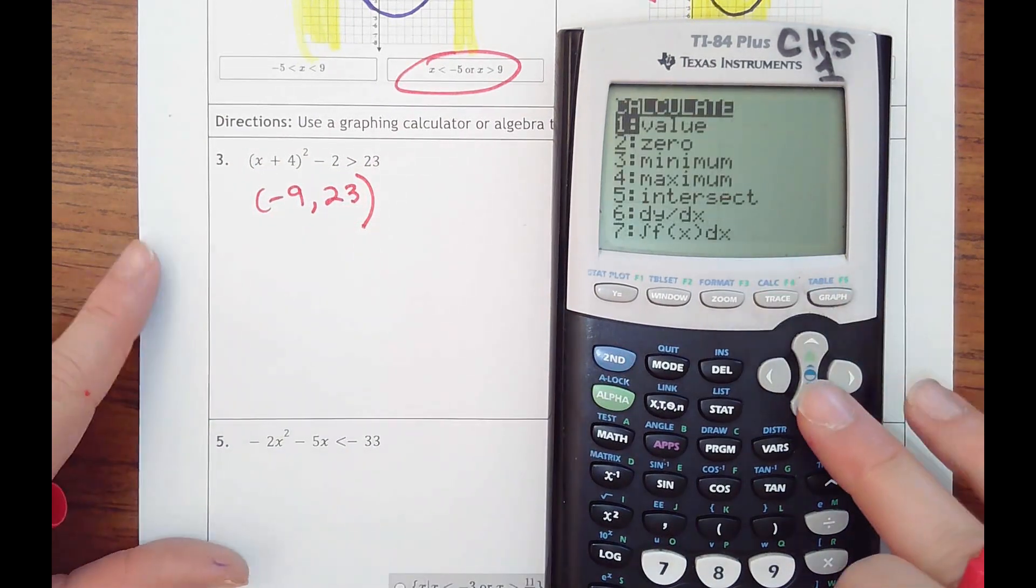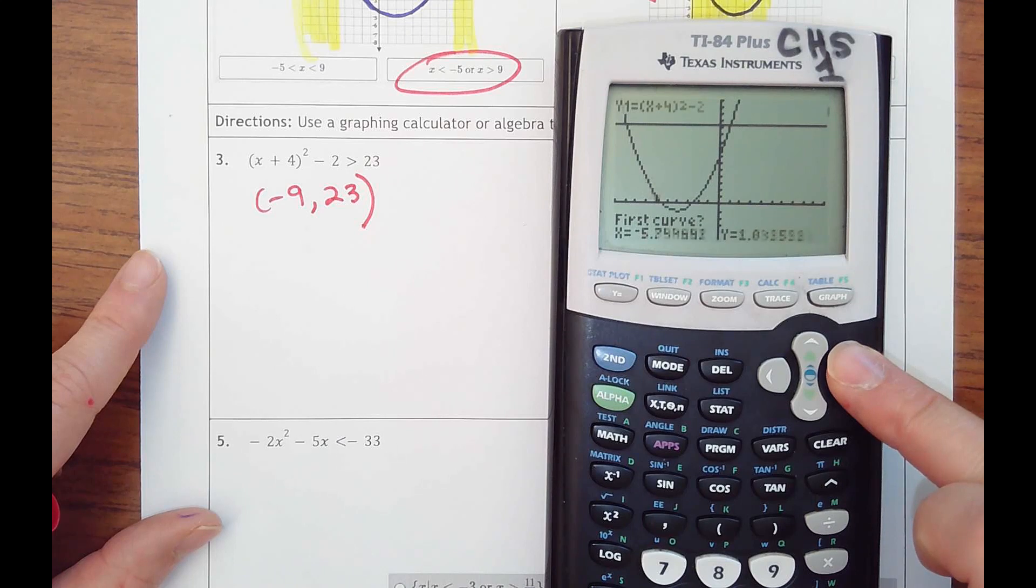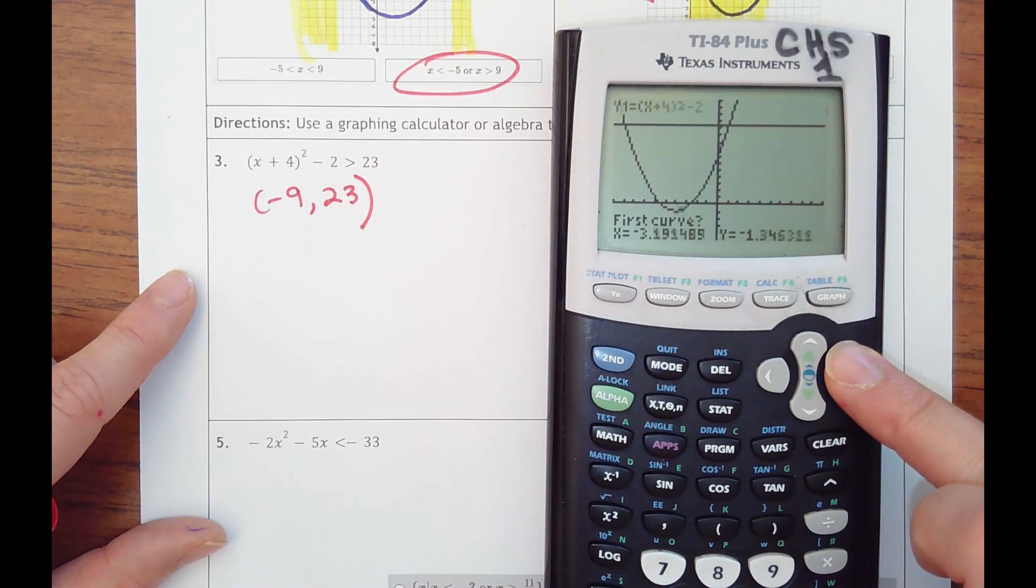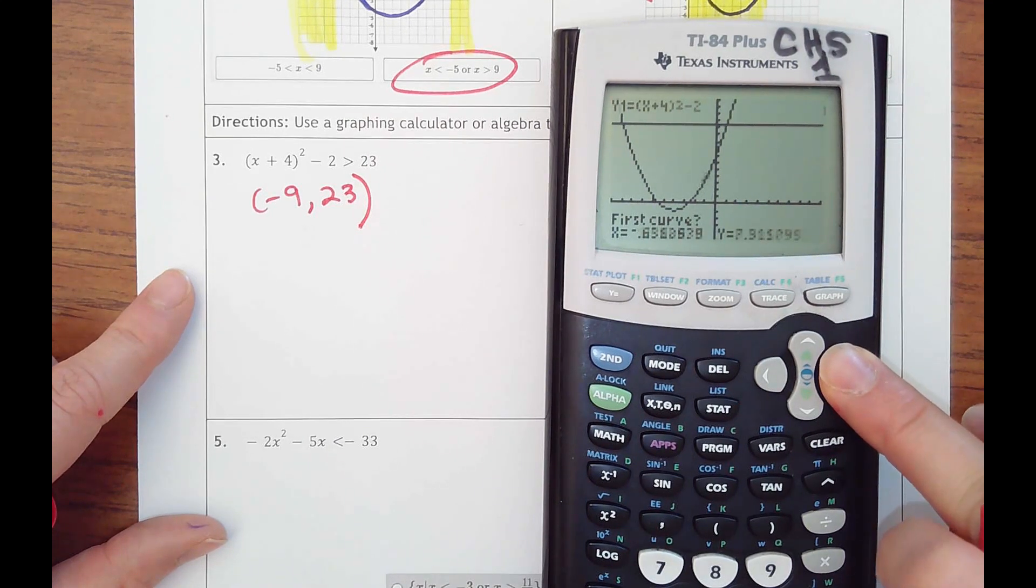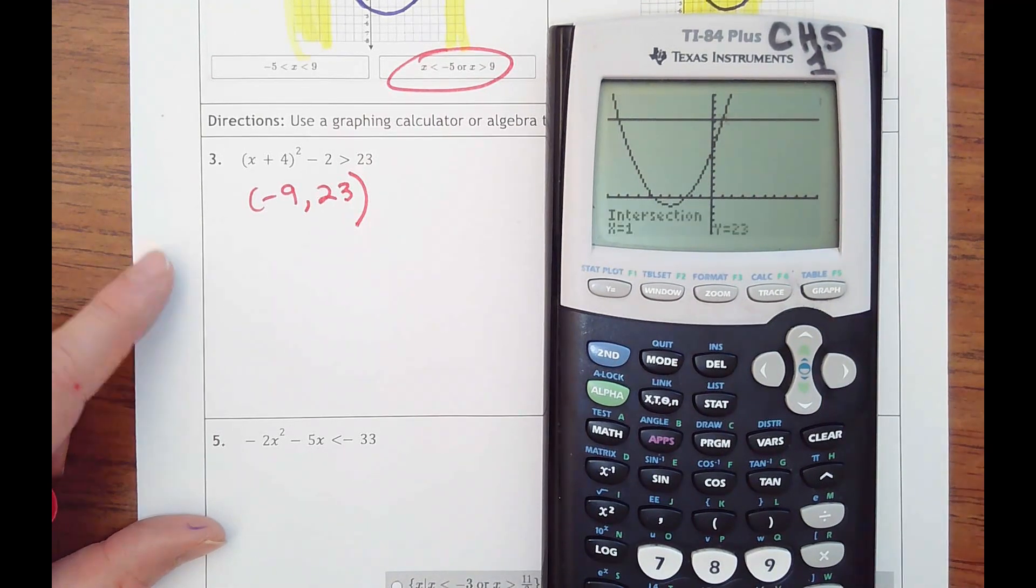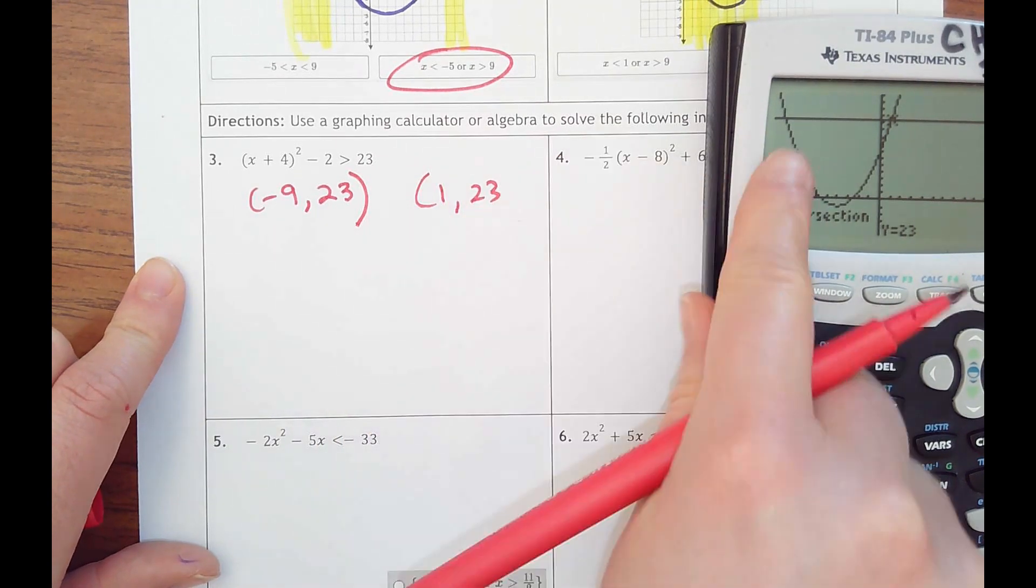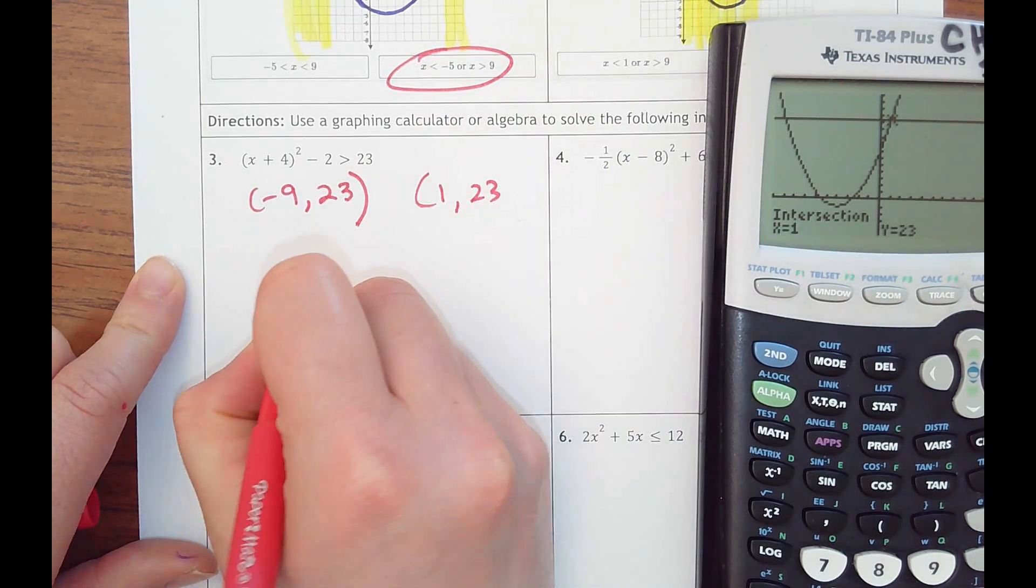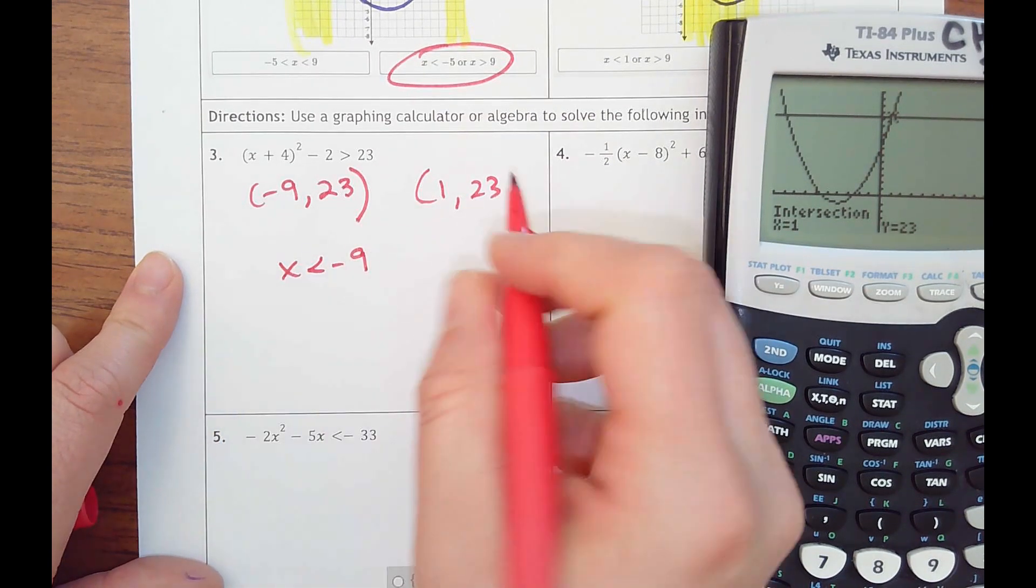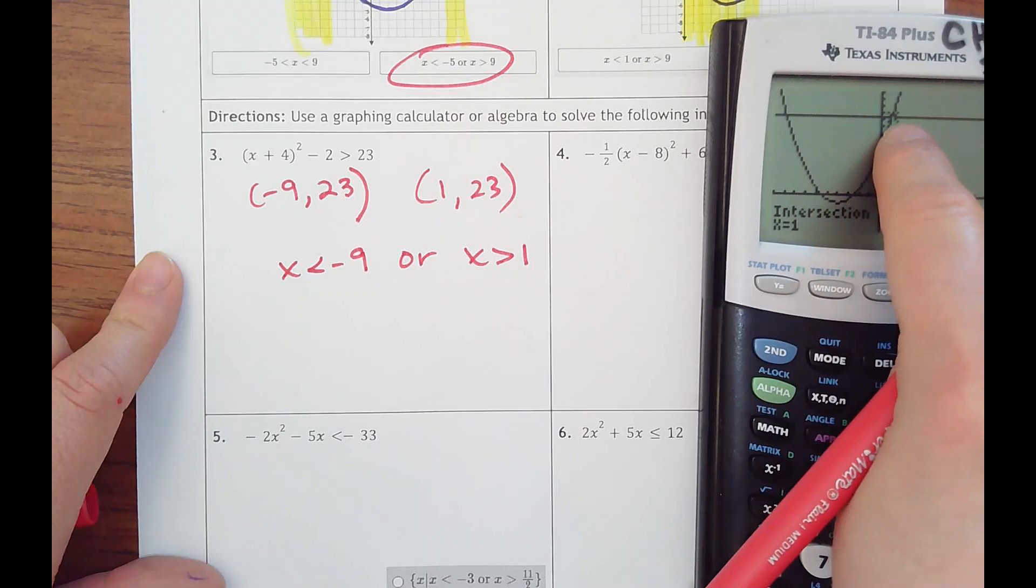Other one, go over closer somewhere there. This one, enter, enter. That's at 1, 23. So x values need to be less than negative 9 or greater than 1.